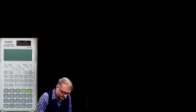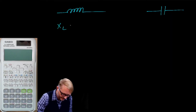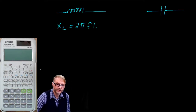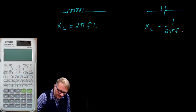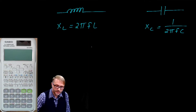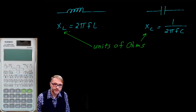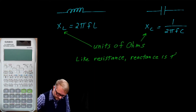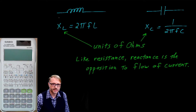We talked about inductors and capacitors. The reactance of an inductor is 2π times the frequency of the circuit times L, which is in units of henries. The capacitive reactance is equal to 1 over 2π times the frequency times the capacitance. Reactance has units of ohms and, like resistance, is the opposition to the flow of current. The difference is that inductors and capacitors store energy while resistors burn it.